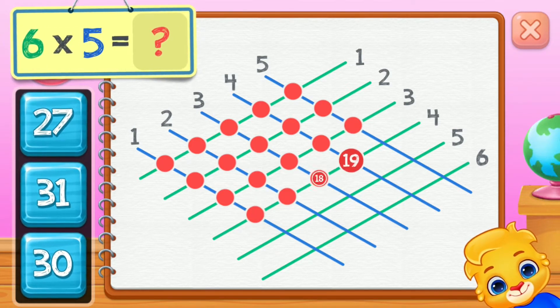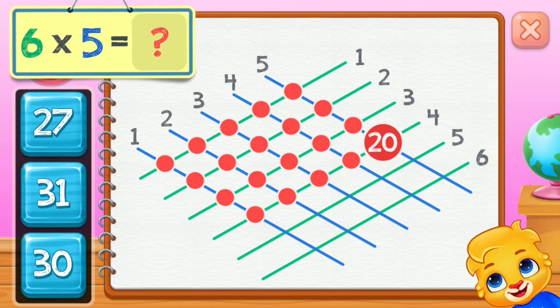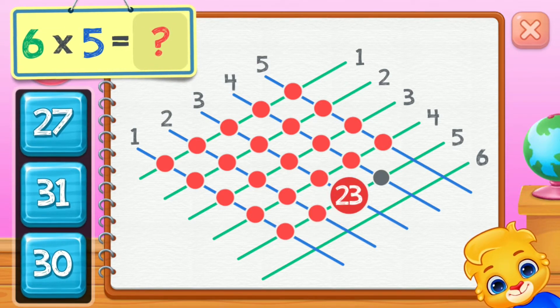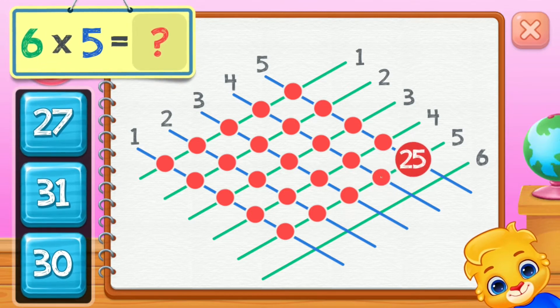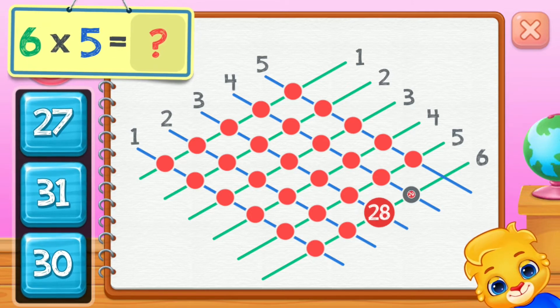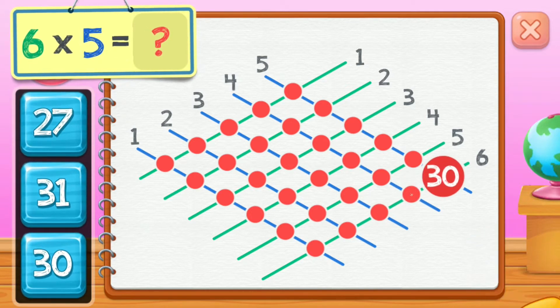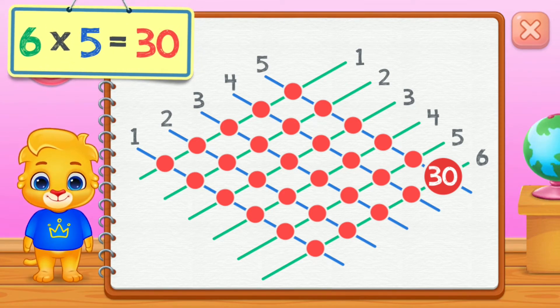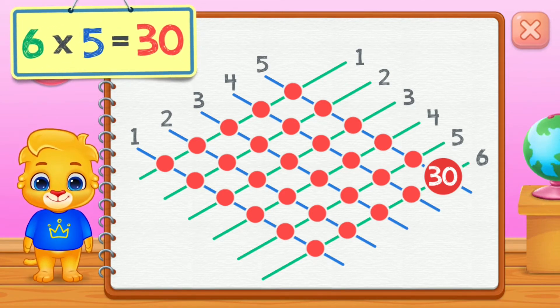16, 17, 18, 19, 20, 21, 22, 23, 24, 25, 26, 27, 28, 29, 30. 6 times 5 equals 30.